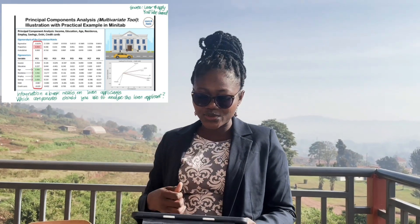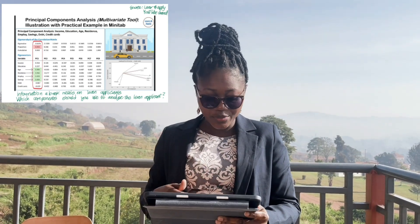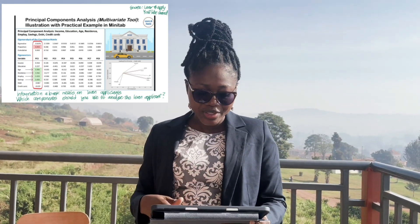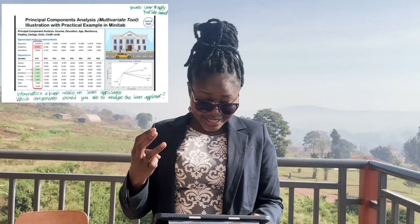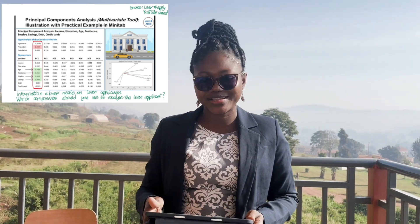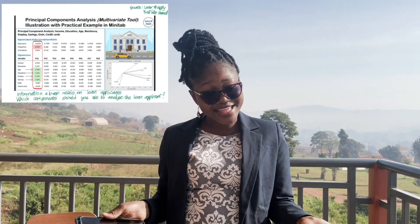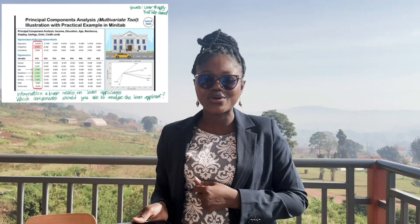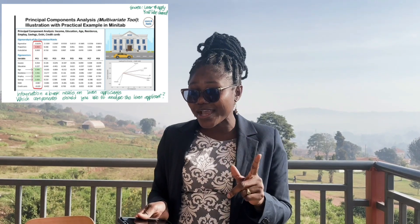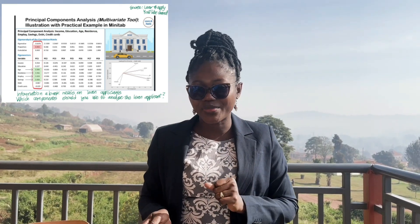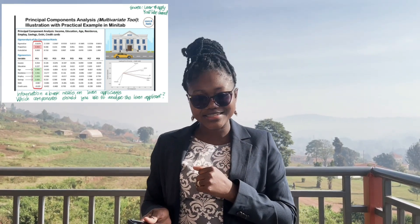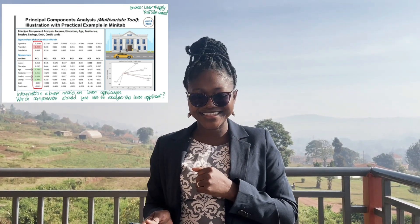And when this was done with this example, we realized that to decide whether to give someone a loan, the age, the residence, the employment, and the savings matter. So you see, the math that we do has real-life applications. And anytime you hear about artificial intelligence or machine learning, you now know the math behind it. Thank you.